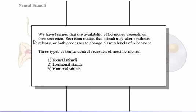We have learned that the availability of hormones depends on their secretion. Secretion means that stimuli may alter synthesis, release, or both processes to change plasma levels of a hormone. Three types of stimuli control secretion of most hormones: neural stimuli, hormonal stimuli, and humoral stimuli.